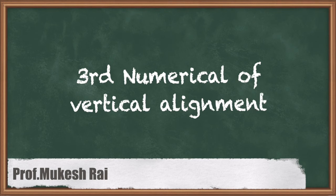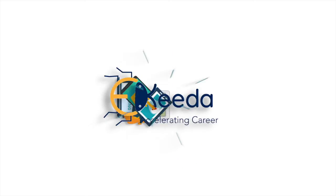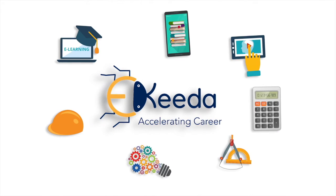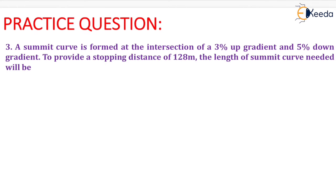Hello students, today we are going to solve the third numerical of vertical alignment. Question is given as: a summit curve is formed at the intersection of a 3% up gradient and 5% down gradient. To provide a stopping distance of 128 meters, the length of summit curve needed will be...